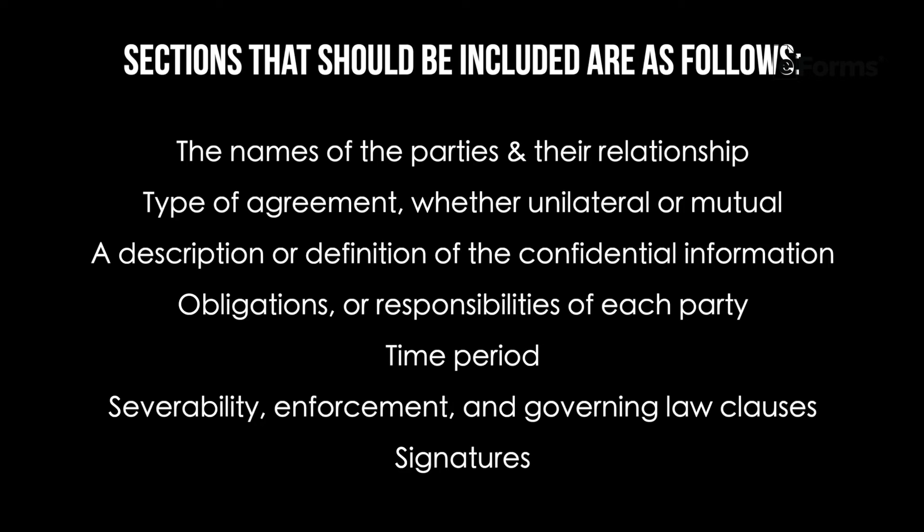Now, what should the agreement include? At a minimum, sections that should be included are as follows: the names of the parties and their relationship, type of agreement — whether unilateral or mutual — a description or definition of the confidential information, obligations or responsibilities of each party, time period, severability, enforcement and governing law clauses, and signatures.